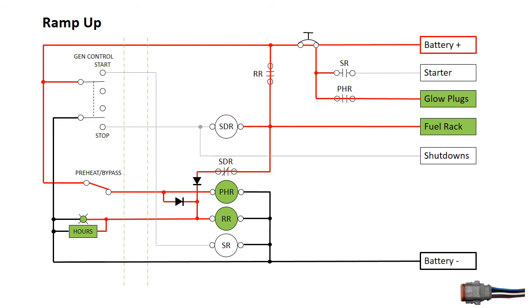We can now release the preheat and bypass switch, de-energizing the preheat relay and the glow plugs. The lower blocking diode prevents the preheat relay coil from being energized by the run relay latching circuit.